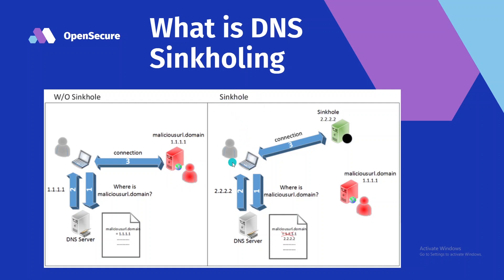Where in the event of where we have sinkholing in place, when our endpoint asks our DNS server where is maliciousURL.domain, and it tells us back 2.2.2 instead of 1.1.1.1 — we now send our traffic to an IP address that isn't actually maliciousURL.domain. So our endpoint sends traffic to an IP address that does nothing with it. We are now sending all of our traffic to one of our own devices. So now if this was a command and control server, for example, our traffic would not send out to this guy, so our endpoint would not be able to connect with the IP address that is assigned to maliciousURL.domain.